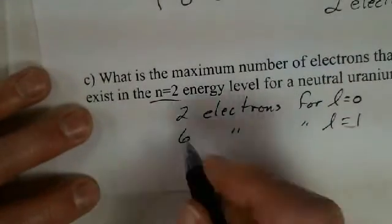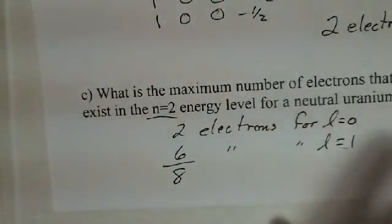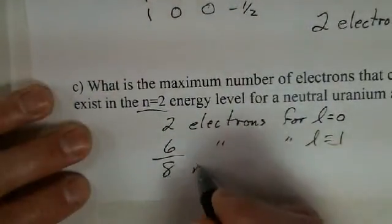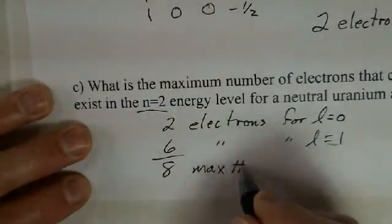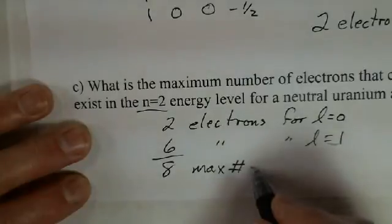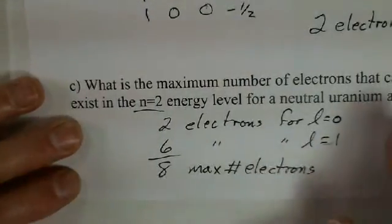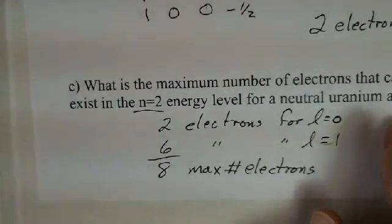Don't need your calculator. Eight electrons is our limit. That's the maximum number of electrons in the n equals 2 level for the uranium atom.